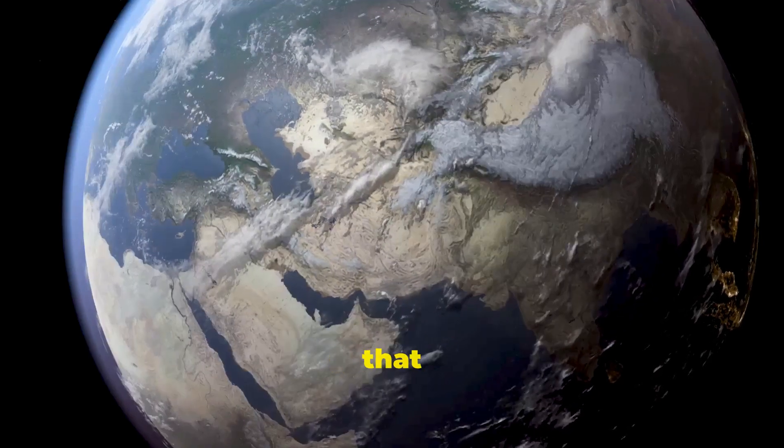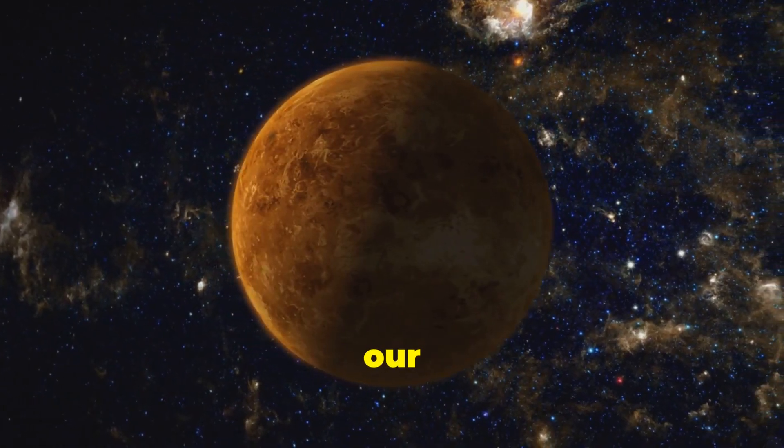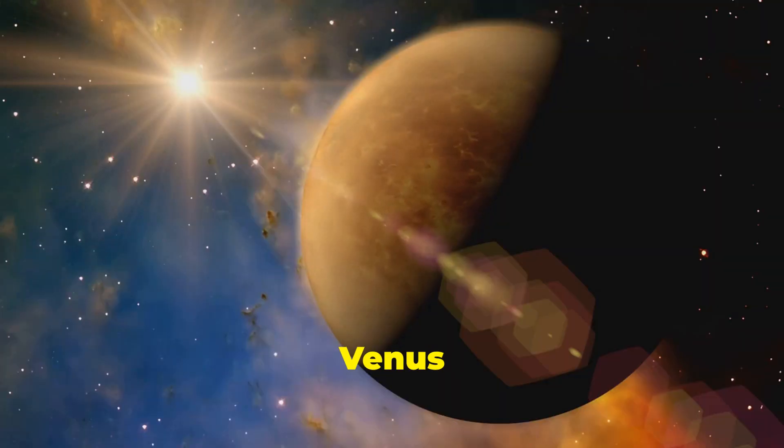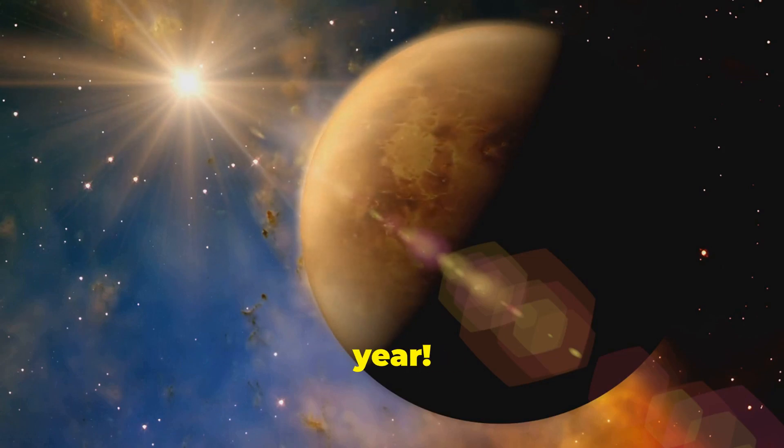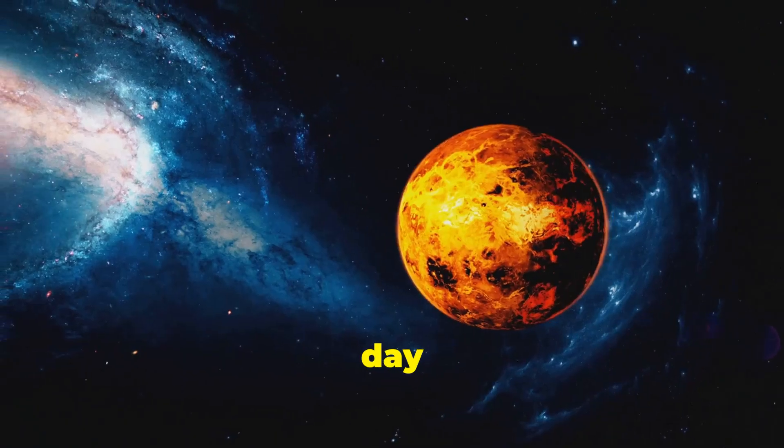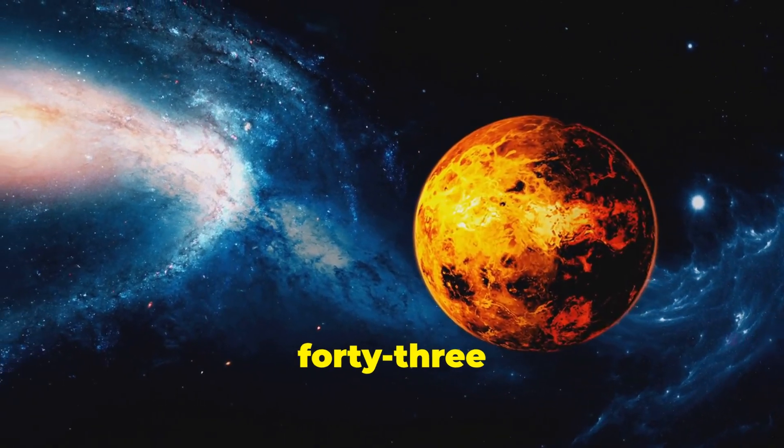We all take for granted that a day is a day and a year is a year, but on Venus, our closest planetary neighbor, things get a little weird. You see, Venus rotates on its axis so incredibly slowly that a single day on Venus lasts longer than a Venusian year. I know it sounds like something out of a science fiction novel, but it's true.